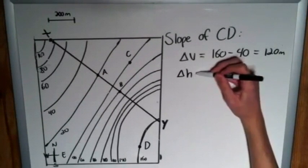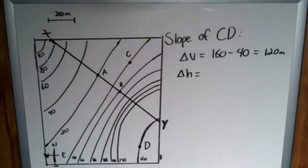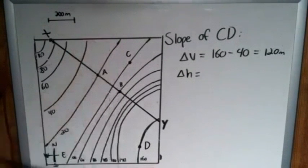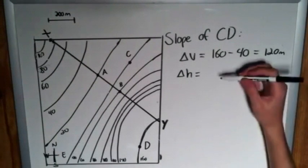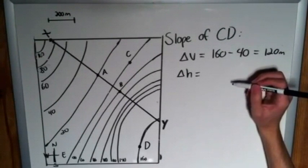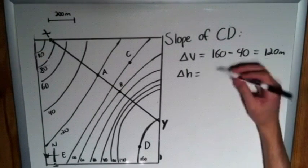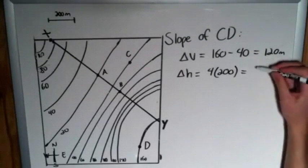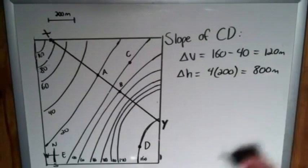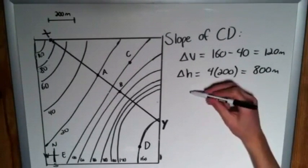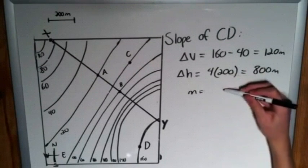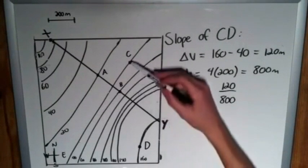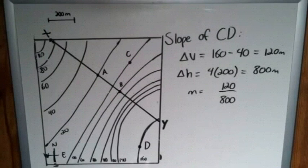Delta H is going to be our quick little measurement. That appears to be about 8 inches even, estimating a bit. So, if for every 2 inches we have 200 meters, then that's 4 times 200. So, our horizontal change is going to be 800 meters. So, finally, m is going to be 120 over 800. Just a final little example, and this does, once again, account for this more rapid period of change.